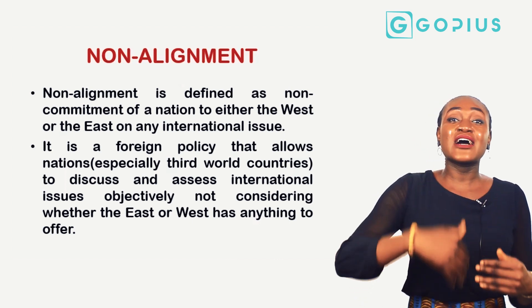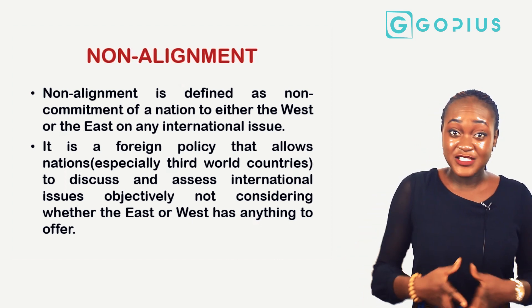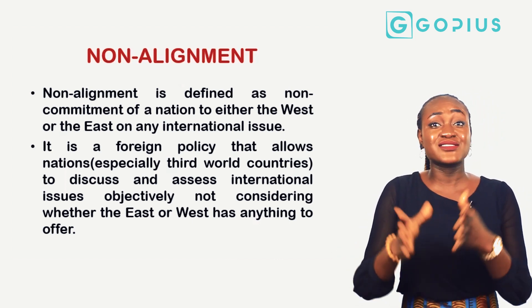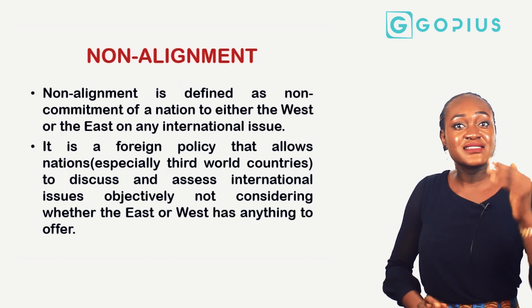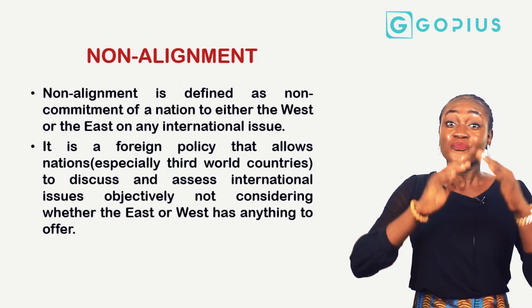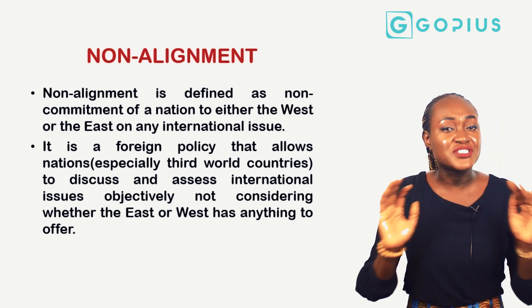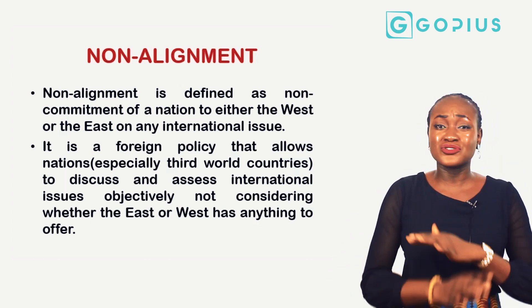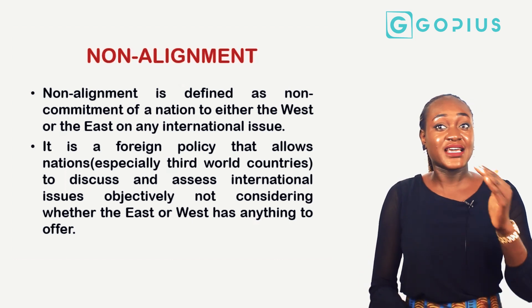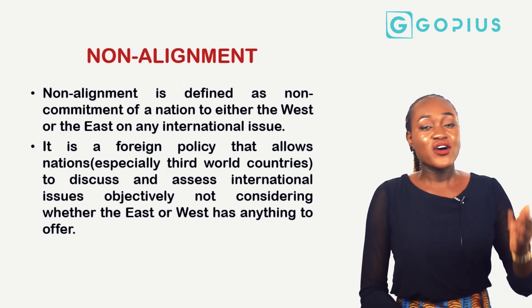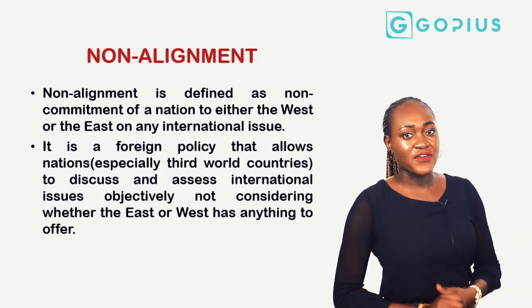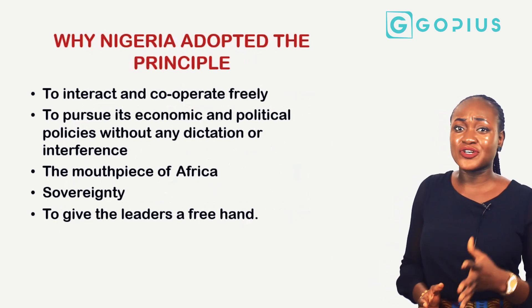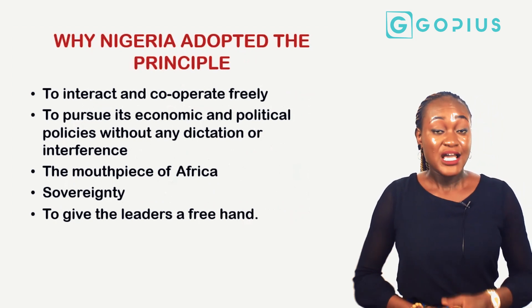Non-alignment is a foreign policy that allows nations, especially third world countries, to discuss issues and assess international problems objectively — not subject to any bloc, and not considering whether the east or the west has anything to offer. So why would Nigeria adopt this principle of non-alignment?